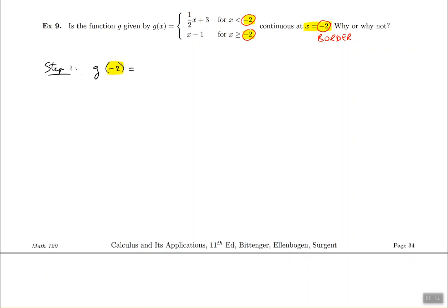First, I need to know which equation to use — there are two equations. The answer is to look at the condition. Which condition, the top one or the second one, allows x to be equal to negative 2? That only happens in the second equation, where the condition says x has to be greater than or equal to negative 2. So I am expected to use the second equation, which is x minus 1. Replacing x with negative 2 gives us negative 2 minus 1, which equals negative 3.